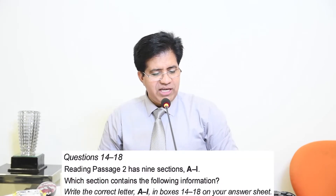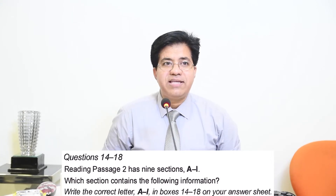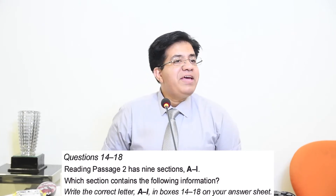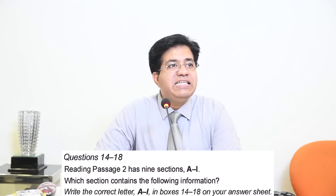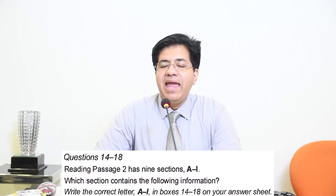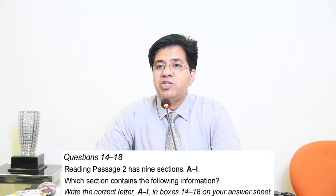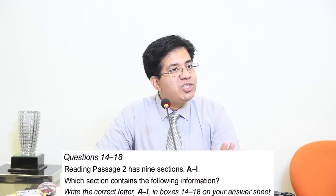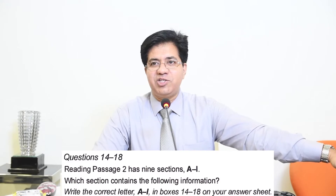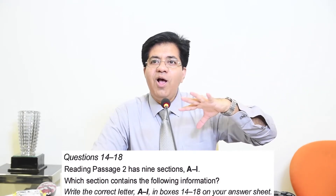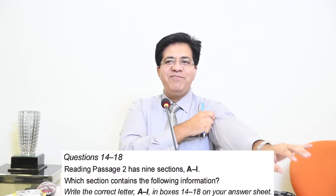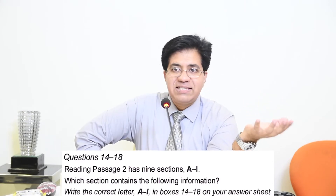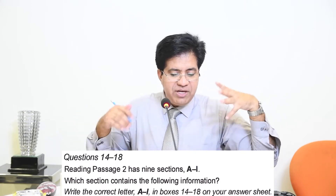Questions 11 to 16. Reading Passage 2 has 9 sections. Whenever a passage is labelled A, B, C, D — trouble is waiting for you. And that trouble is what we call Type B questions, where questions and answers are never in order. For one question you have to scan all the passage; for the second question you have to scan all the passage. So always try to do Type B questions at the end of the passage, not in the beginning — otherwise your brain will be drained.